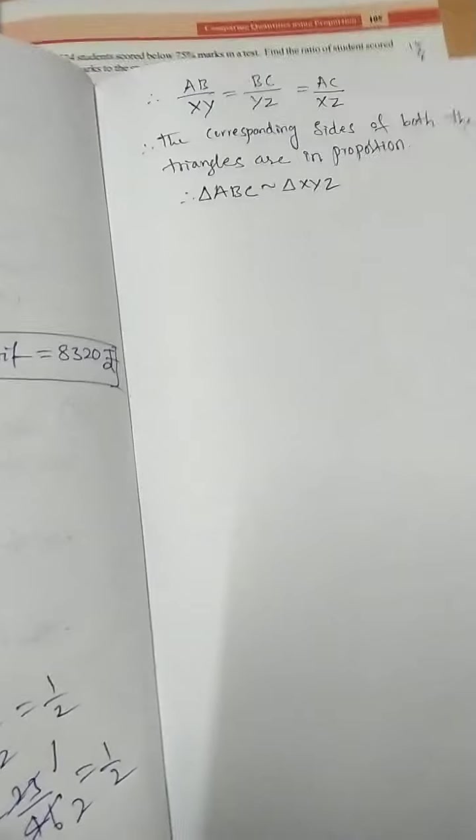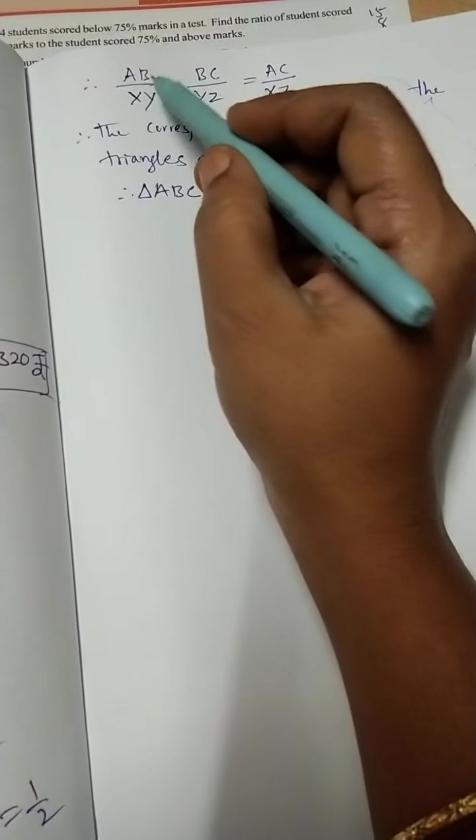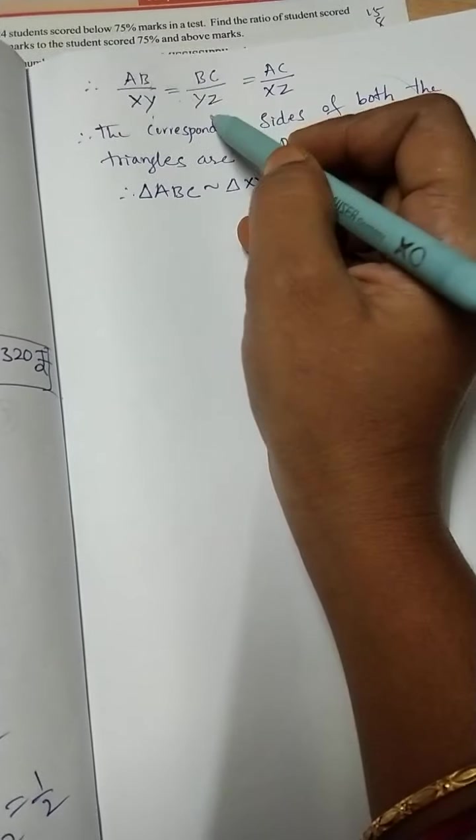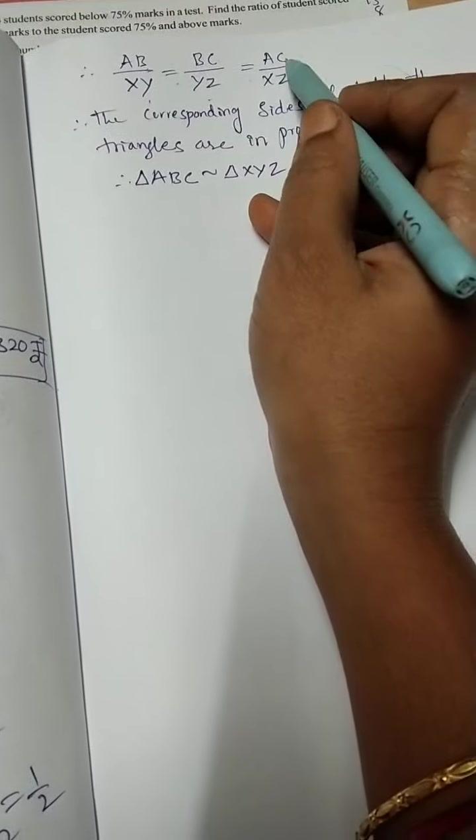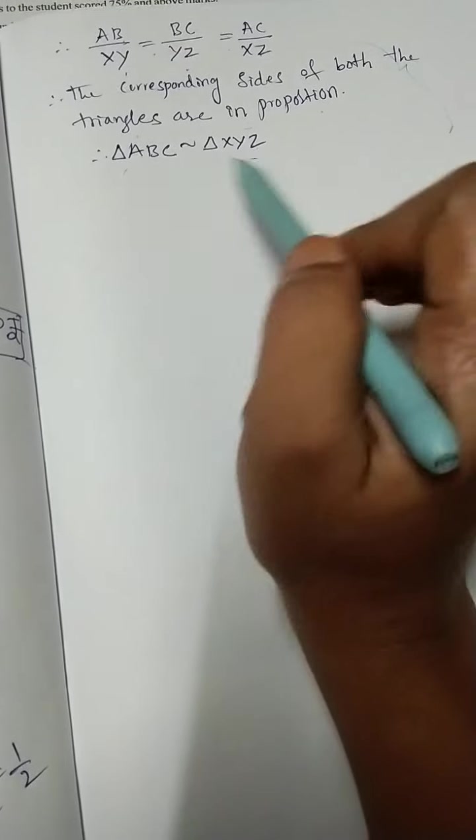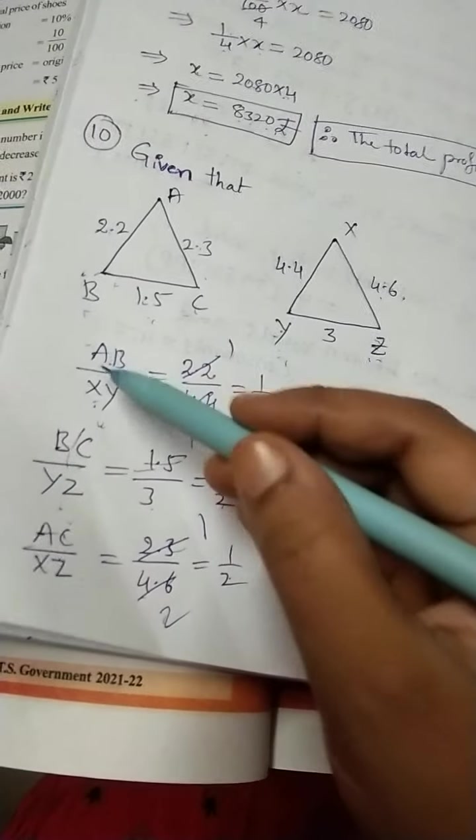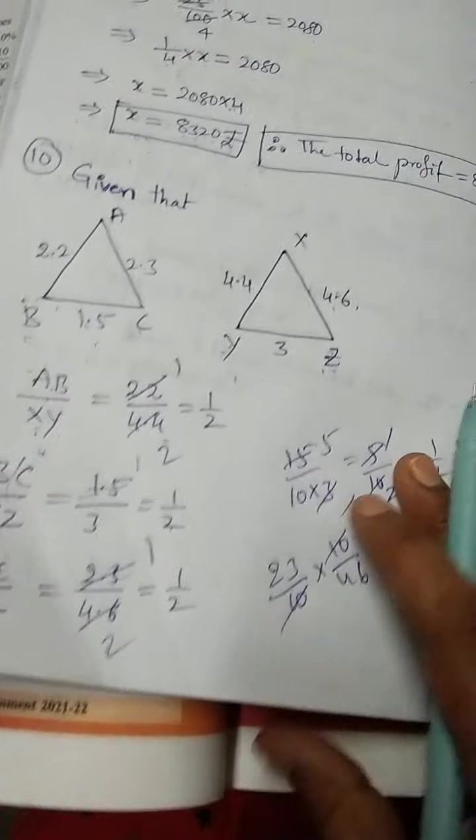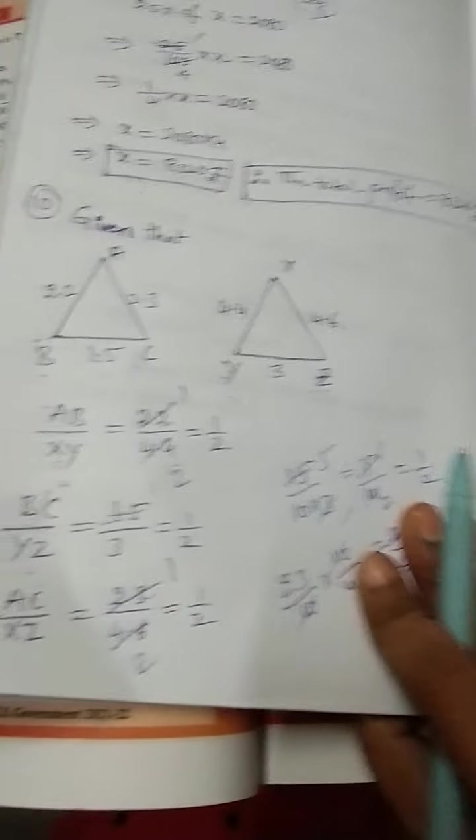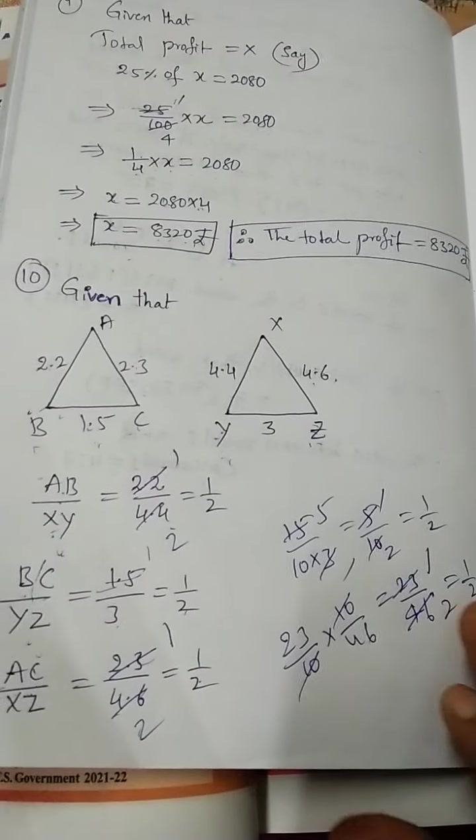Now we can say that AB by XY is equal to BC by YZ is equal to AC by XZ. The corresponding sides of both the triangles are in proportion. Therefore, these two are congruent triangles, we can able to write. Why? Because these all values are equal, so we should equate these all corresponding sides ratios. I hope you understood. Thank you.